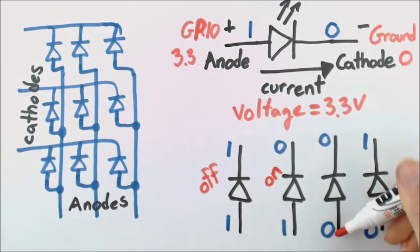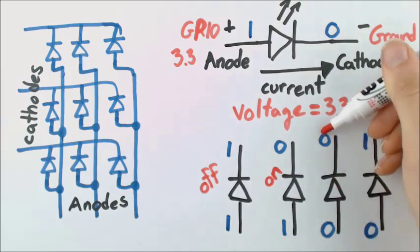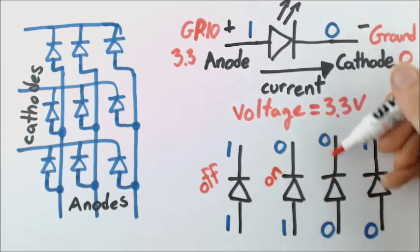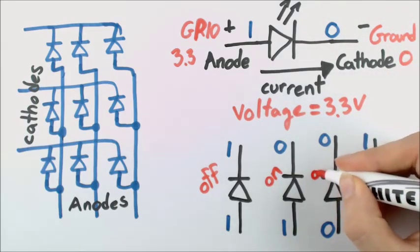Now if I had 0 volts going in, because this is off, and 0 volts, well, 0 minus 0, of course that's off. So if I connect both to ground, I shouldn't expect anything, so that's off.